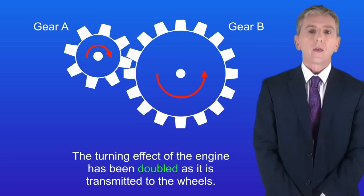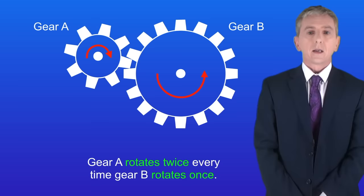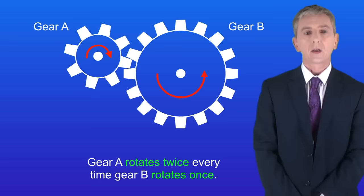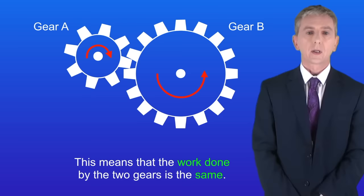This means that the turning effect of the engine has been doubled as it's transmitted to the wheels. Now I should point out that gear A rotates twice every time gear B rotates once. This means that the work done by the two gears is the same.